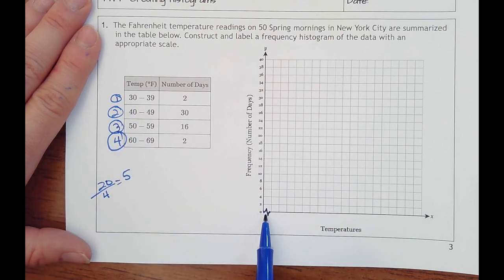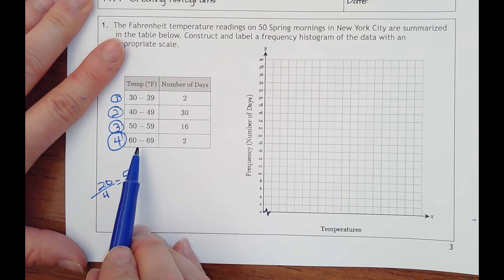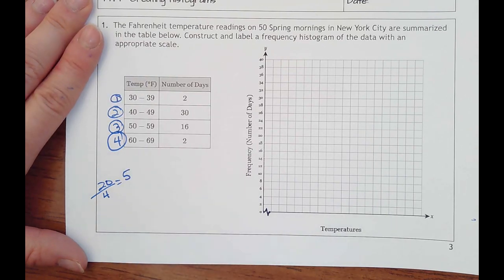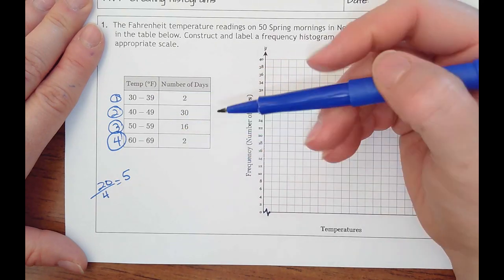And the reason that happens is because our lowest temperature isn't until 30 degrees. So we wouldn't want to start at zero and count by ones or twos because then you wouldn't even be able to fit 30 on here until way down here. And then also you would have all your data kind of crammed together. So that's what a line break is for. You can skip some numbers and start really where your data starts.